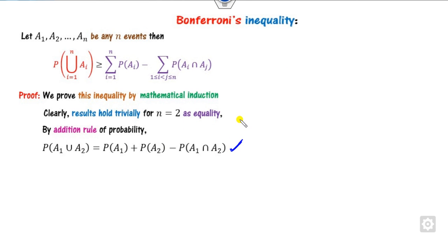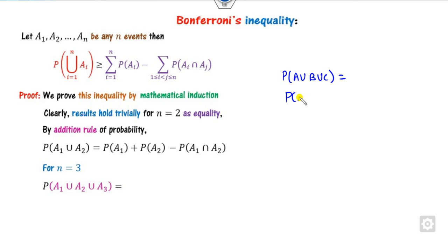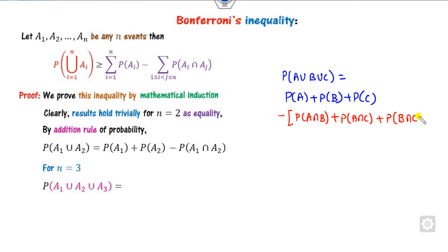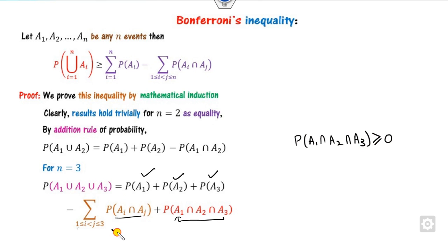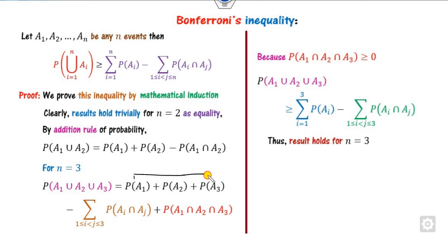Taking N=3, the probability of A union B union C equals probability of A plus probability of B plus probability of C, minus the sum of pairwise intersections, plus the probability of the triple intersection. Since the probability of the triple intersection is greater than or equal to zero, the result shows that the probability of the union is greater than or equal to the sum of individual probabilities minus the sum of pairwise intersection probabilities. So the result holds for N=3.